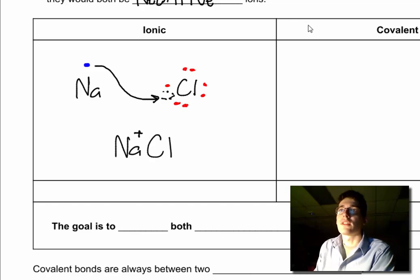And a chlorine that now, if you draw your valence, has one, two, three, four, five, six, seven of its own plus sodium's one valence electron.